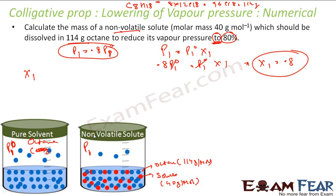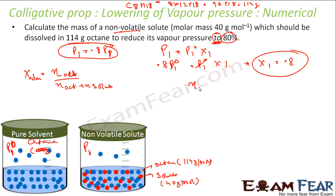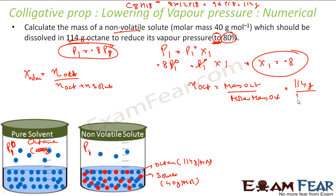Mole fraction of octane x1 equals moles of octane divided by (moles of octane plus moles of solute) = 0.8. Moles of octane equals mass of octane divided by molar mass of octane: 114 gram divided by 114 gram per mole equals 1 mole. Moles of solute is unknown, so let us find it.